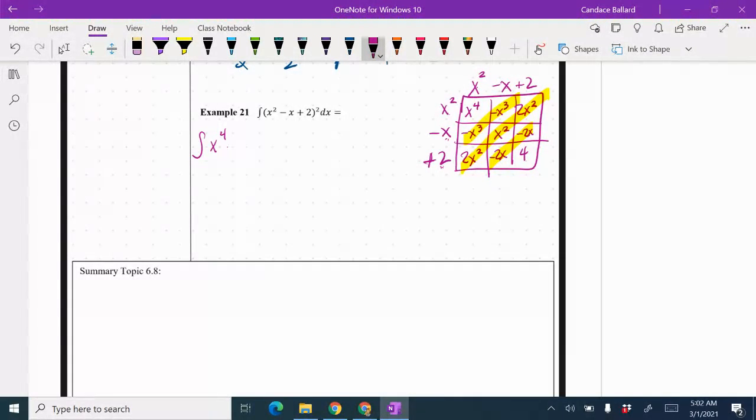negative x cubed and negative x cubed is negative 2x cubed. 2x plus x is 3x plus 2 would be 5x squared. And then negative 2x and negative 2x would be negative 4x plus 4 dx.